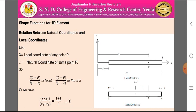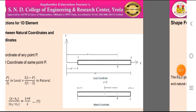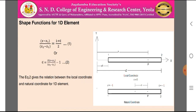The ratio of the distance from node 1 to point P divided by the total distance from node 1 to node 2 in the local coordinate system equals the same ratio in the natural coordinate system. For two nodes, this can be written as: (x - x1) / (x2 - x1) = (1 + ε) / 2 — Equation 1. Rearranging gives Equation 2: ε = 2(x - x1) / (x2 - x1) - 1.